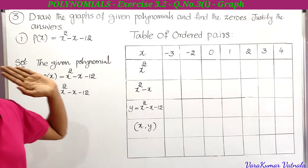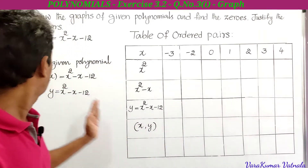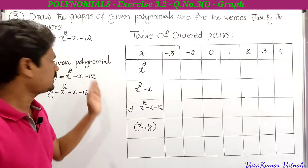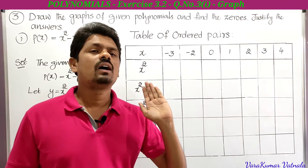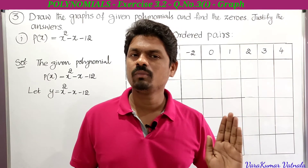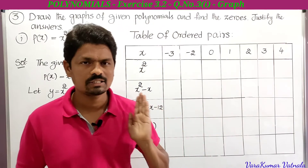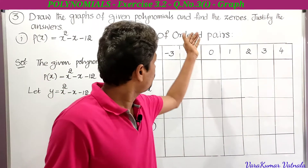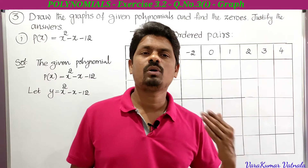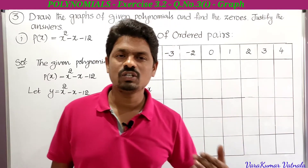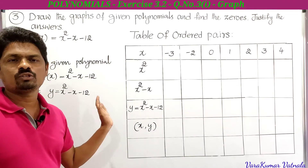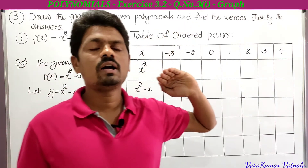The first problem: p of x is equal to x squared minus x minus 12. So the given polynomial is p(x) = x² - x - 12. To draw the graph of the given quadratic polynomial, we have to find the ordered pairs. For that, let the given polynomial y = x² - x - 12. We have to find the table of ordered pairs by taking x values and finding the corresponding y values.